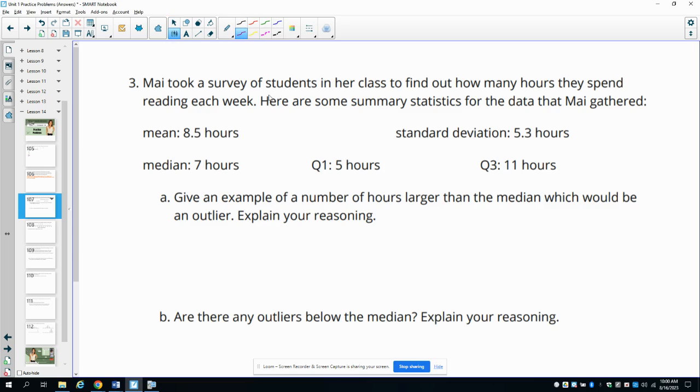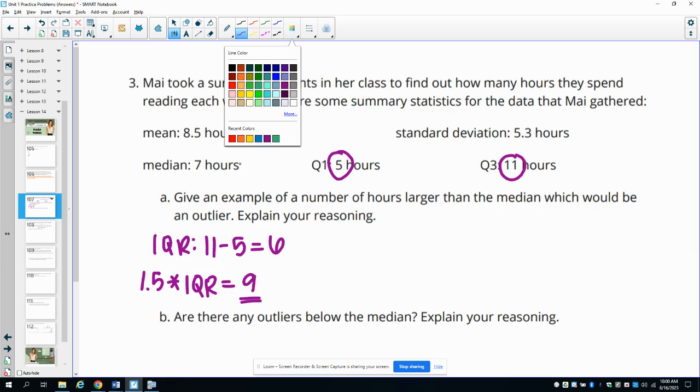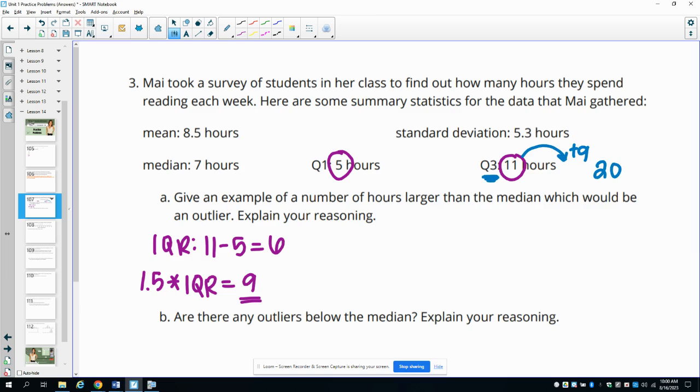The IQR is subtracting your quartile three by your quartile one, so 11 minus 5 gives us an interquartile range of 6. If we take the interquartile range and multiply that by 1.5, so 6 times 1.5, that gives us 9. If our number is 9 higher than the upper quartile, this Q3, meaning if we add 9 to this that would give us 20. Anything 20 and higher would be an outlier, so I'm just going to pick 21. We know because it's more than one and a half times the quartile past Q3.